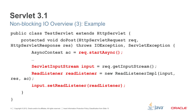In this example, we have a TestServlet with a doPost method. Inside the doPost, I decide to start async, so I call request.startAsync. Then I create a ServletInputStream and create a ReadListener. The next step is to associate this ReadListener with the corresponding ServletInputStream by calling setReadListener on the ServletInputStream.